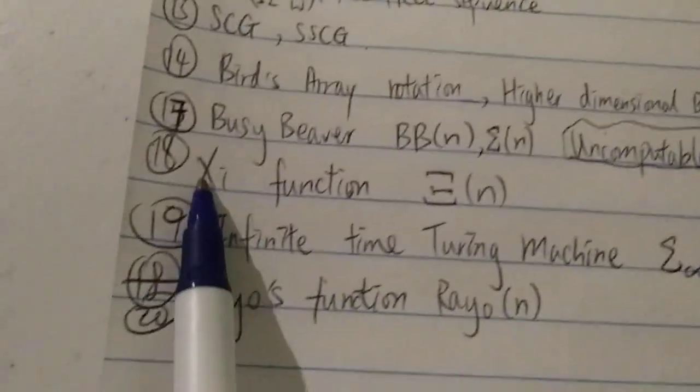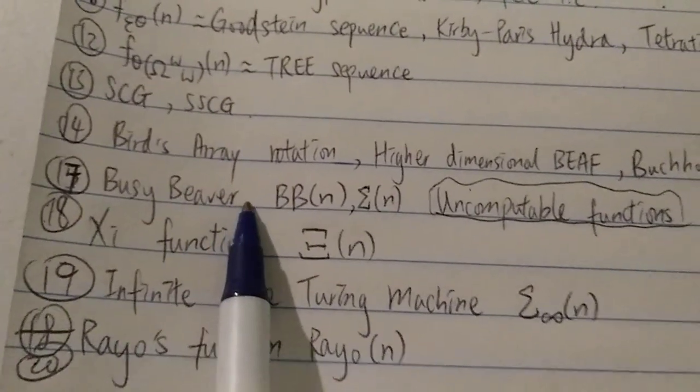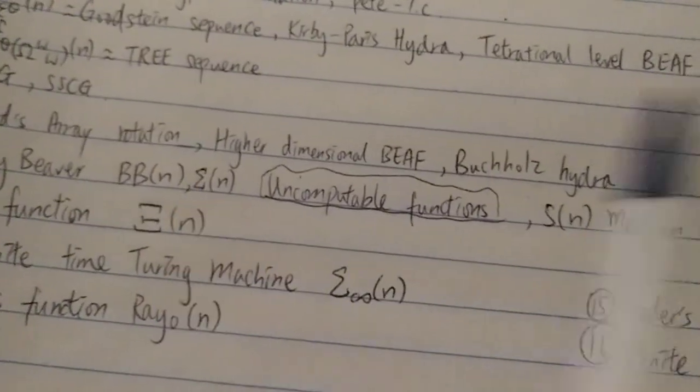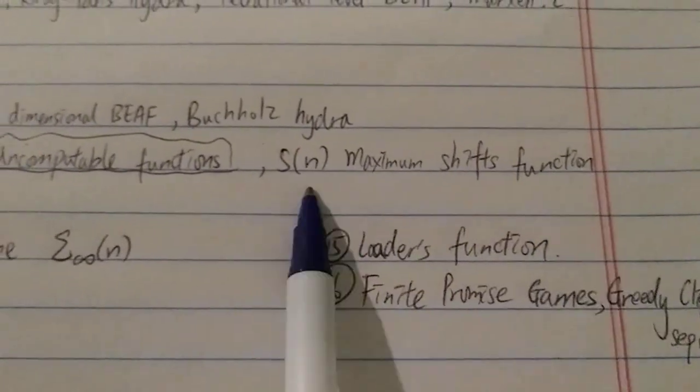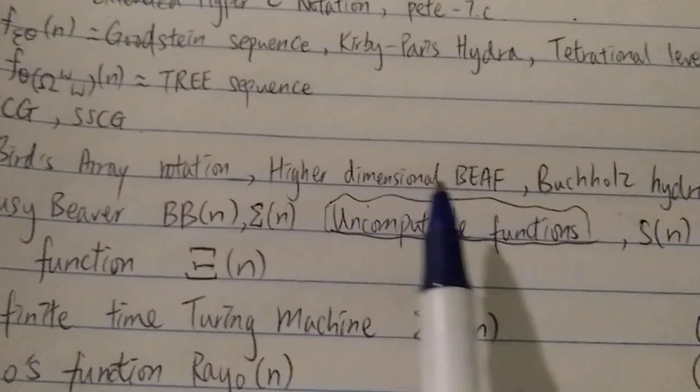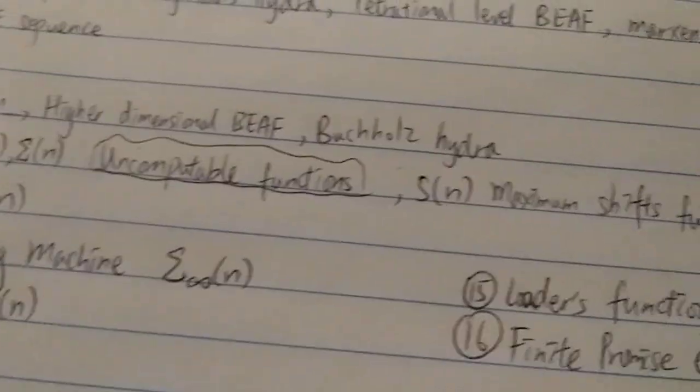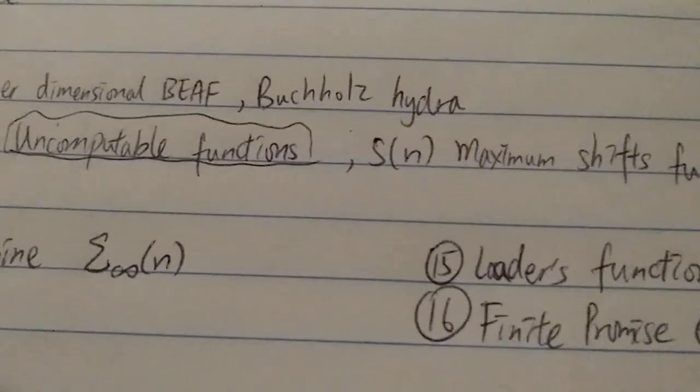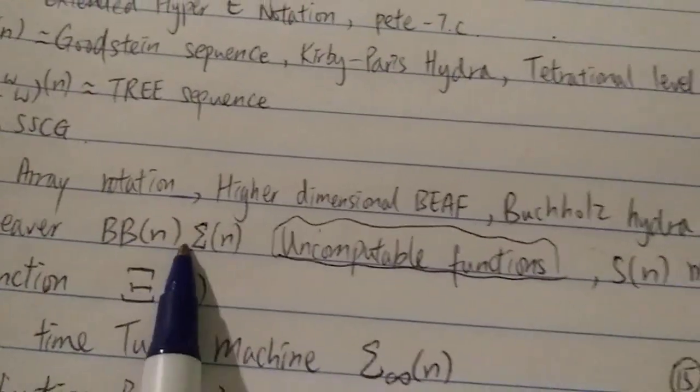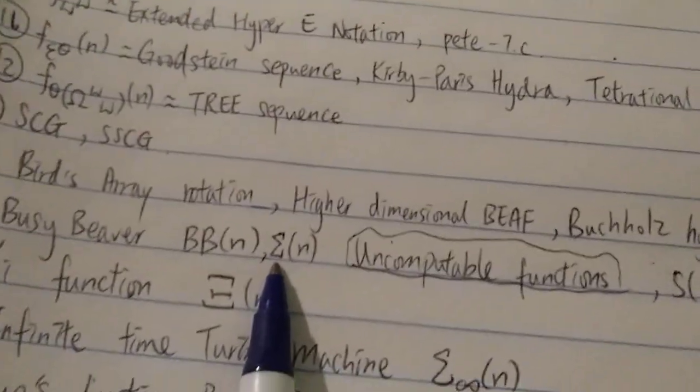And then number 17, finally, we have finally reached the uncomputable functions. Of course, we have the famous busy beaver function, the BB(n) or this notation over here. And also the busy beaver's cousin, the maximum shift function, which is the Σ(n) over here. So BB(n) or this one over here, it represents the maximum number of ones that are printed on an infinite tape before it halts. And Σ(n) over here, it represents the maximum number of steps before it halts. So of course, therefore, clearly Σ(n) has to be bigger than this one because this is the total number of steps. This is just the total number of ones.